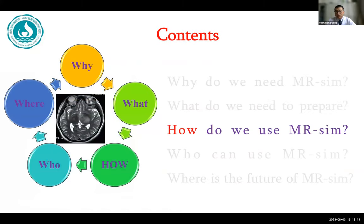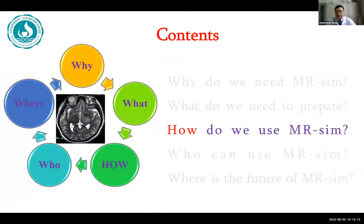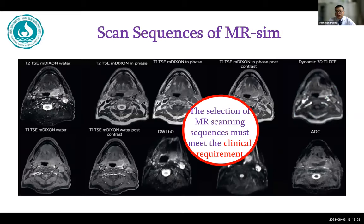The following is how we use MRI simulation. As mentioned earlier, a series of changes must be made when applying MRI simulation. The focus of the debate is the selection and application of scanning sequences, such as MRI sequences for head and neck tumors — which is the gold standard, and which ones should be redundant? For radiation therapy, the first thing we need to see is the edge of the tumors, followed by the internal biological information of the tumor.